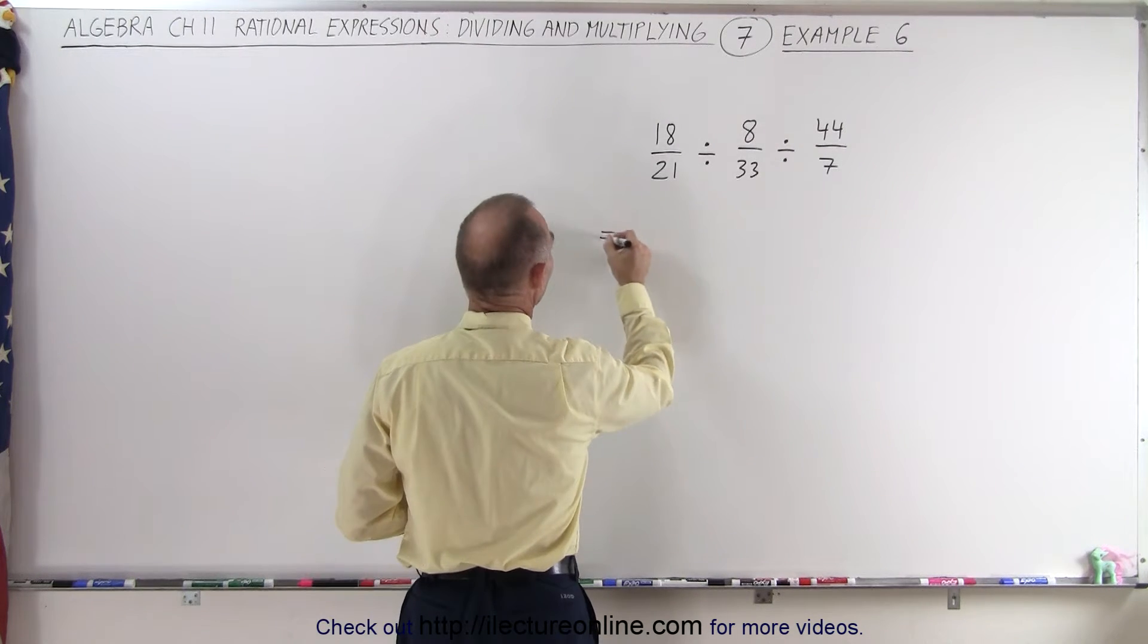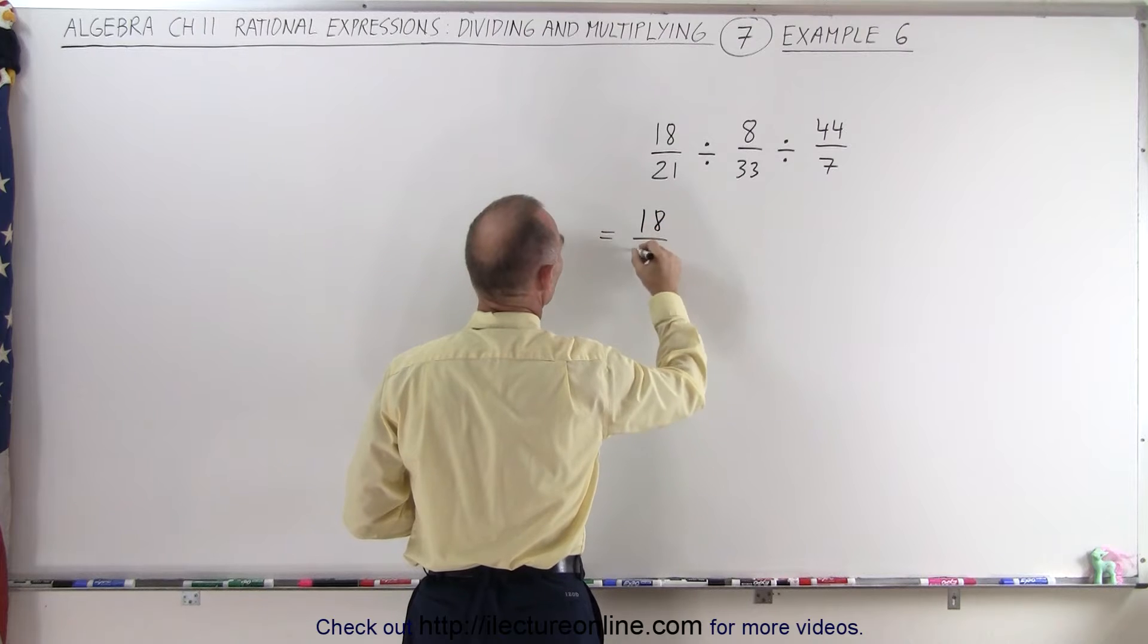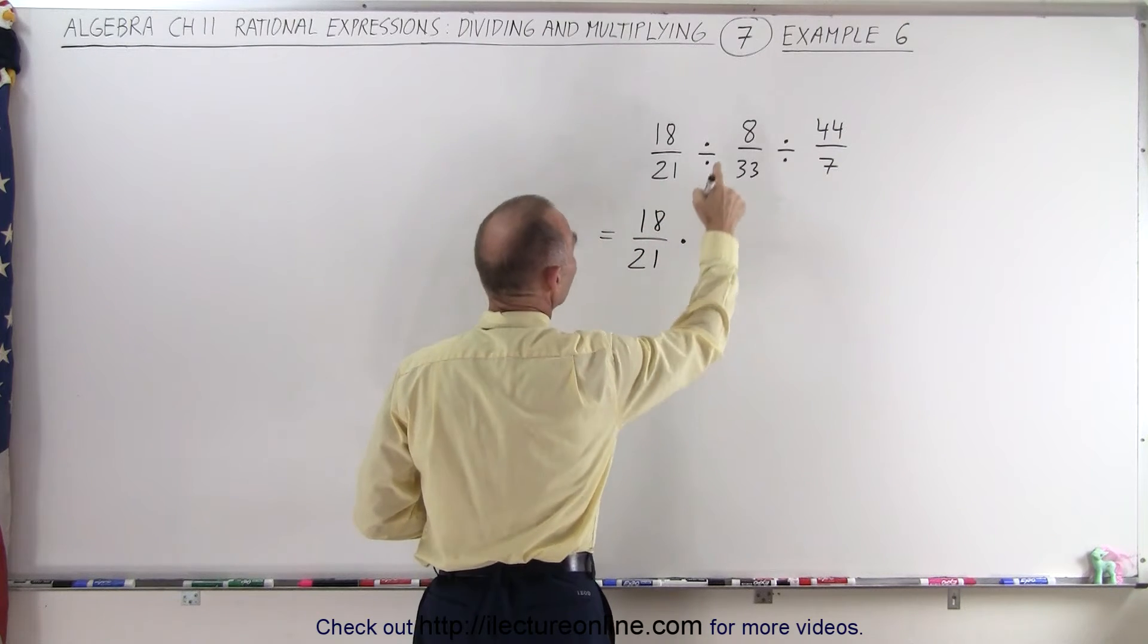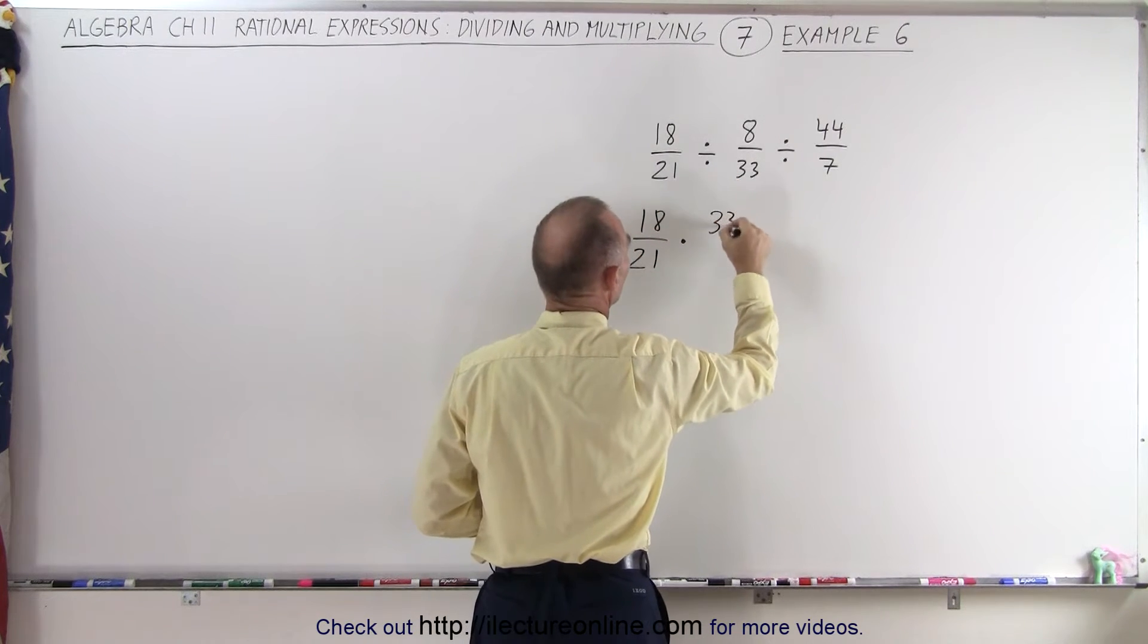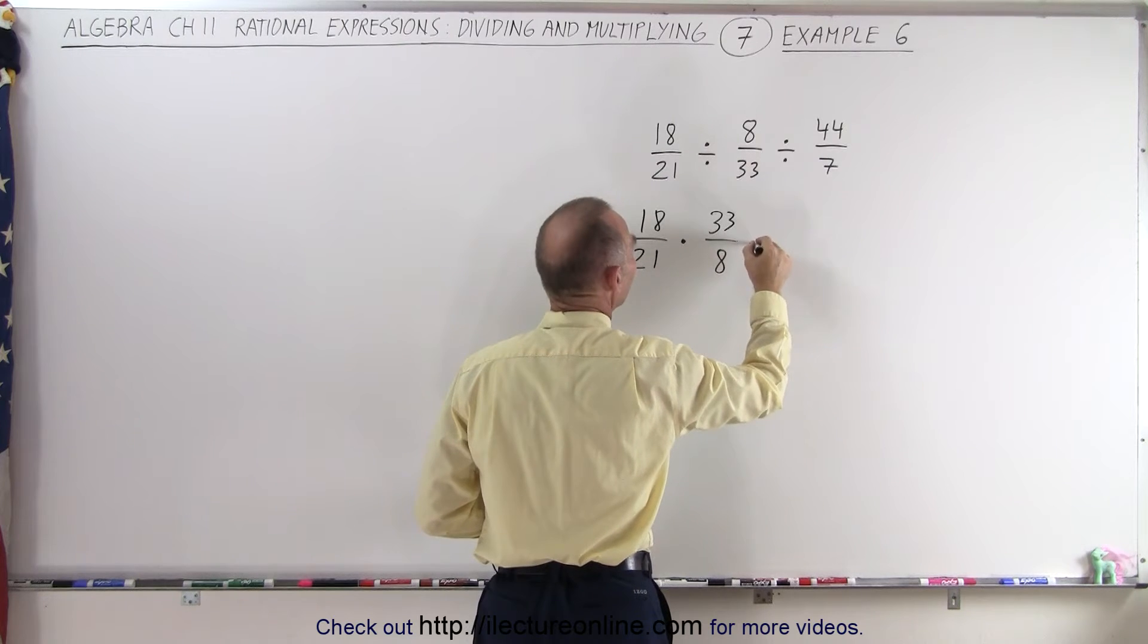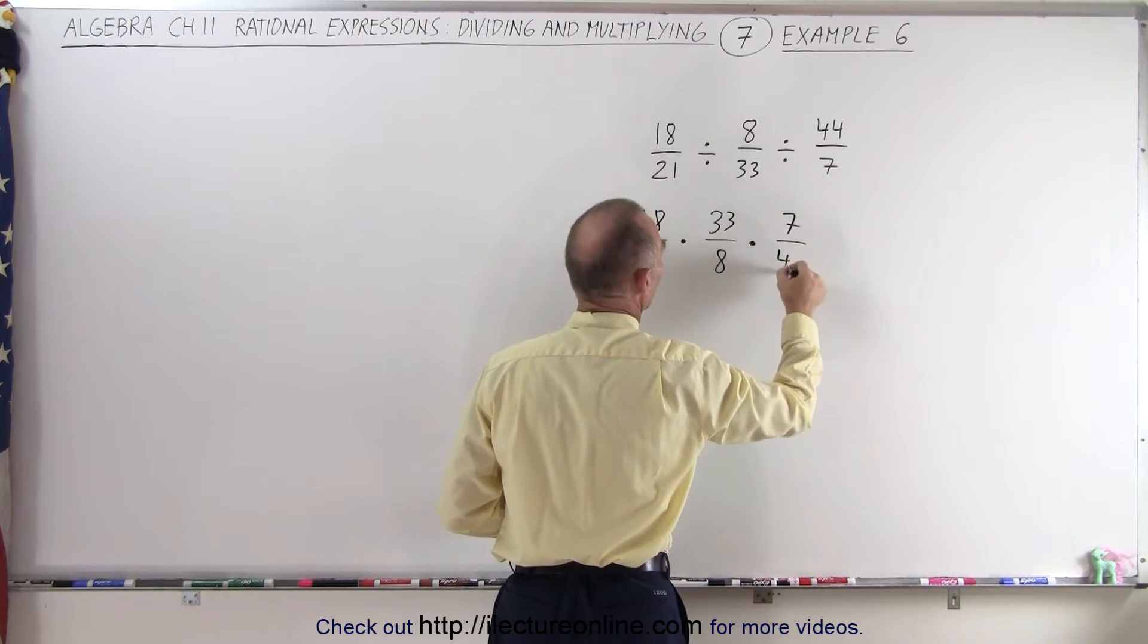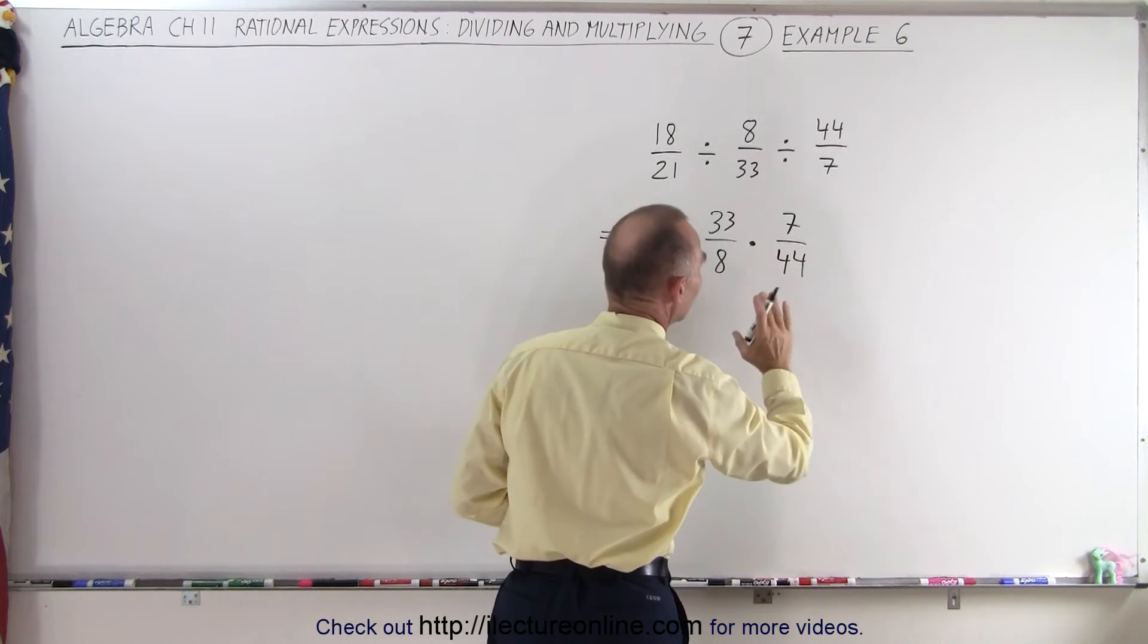And so this then can be written as 18 over 21 times the inverse of that, which is 33 over 8, times the inverse of that, which is 7 over 44. So you just go one at a time,